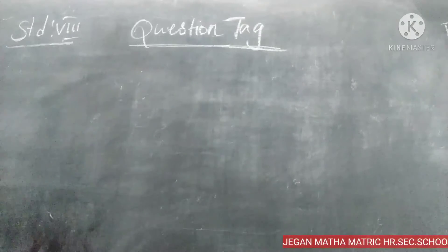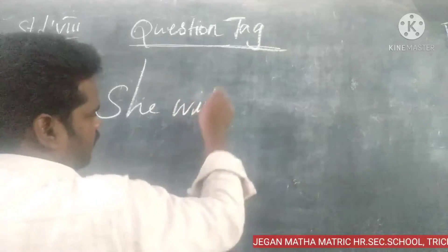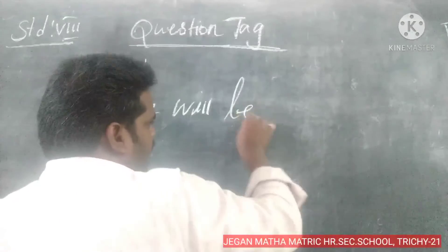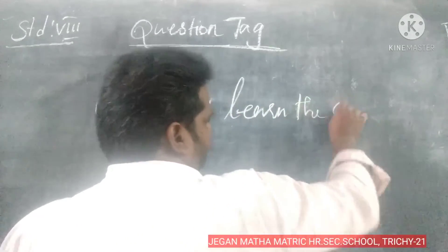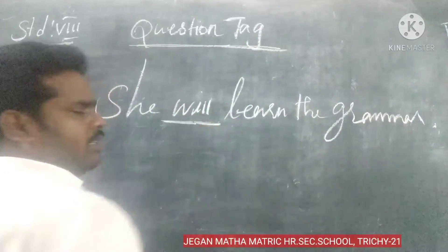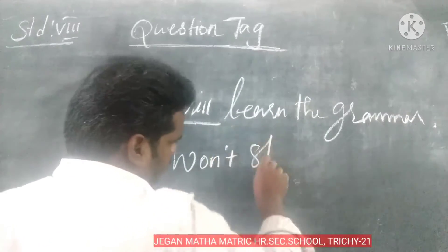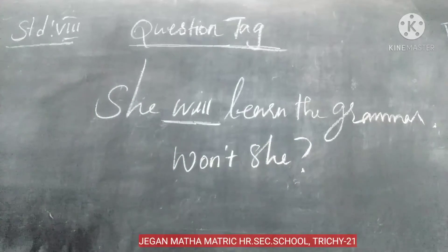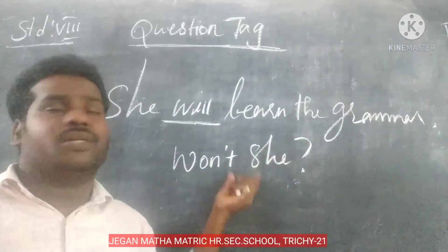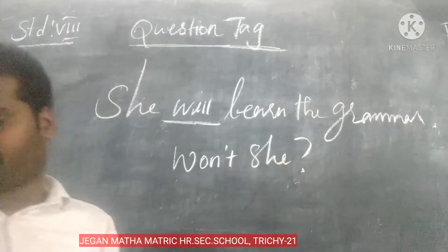Now, future tense with 'will' or 'shall'. Example: 'She will learn the drama' — positive statement with auxiliary verb 'will', so the tag is negative: 'won't she?' If the statement is negative — 'She will not learn' — then the tag is positive: 'will she?' So positive changes to negative, negative changes to positive.